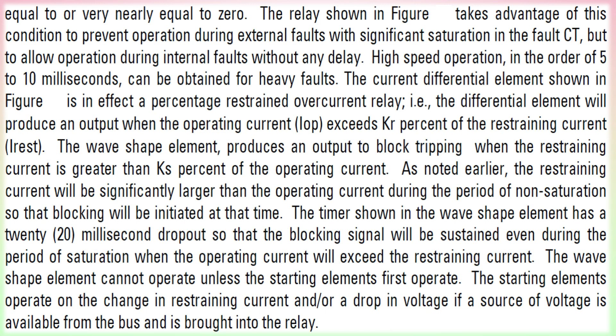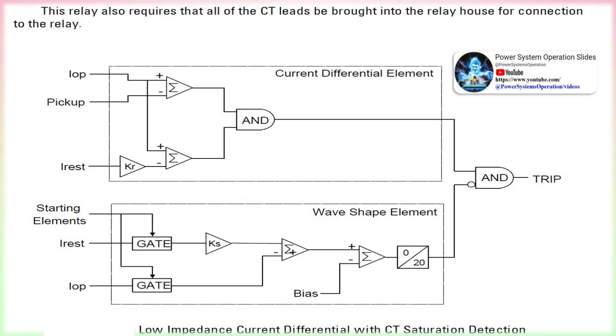The auxiliary CTs are selected to provide a common turns ratio. Selection of the stabilizing resistor (Stab R) is based on the sensitivity of the relay, the slope setting desired, and the largest total resistance in the CT secondary circuits as measured from the main CT to the relay. The stabilizing resistor is selected so that the operating current will not exceed a set value even in the event of total saturation in the main CT circuit having the highest resistance — the worst case condition — because higher resistance forces more current to flow through the operate circuit. This type of relay requires that all CT leads be brought into the relay house. The main CT can also be used to operate other relays provided the added burden is not so large as to preclude selection of a suitable stabilizing resistor.